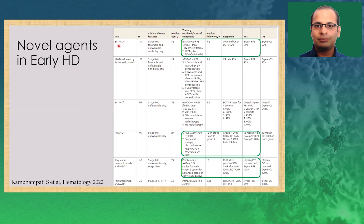Various trials: Brentuximab with AVD — omitting bleomycin — given for two cycles; if PET negative, four cycles; if PET positive, six cycles; with three-year PFS of around 94%. The NIVAL trial used nivolumab for four cycles with radiotherapy, followed by nivolumab-AVD for two cycles or radiotherapy, with very good overall response rates and PFS of around 90-100% in the early stage group. Pembrolizumab given for three cycles followed by AVD showed PFS almost reaching 100% at two years for stage 1-2 unfavorable and stage 3-4. The combination of pembrolizumab and AVD is leading to excellent PFS and overall survival in almost all disease stages.